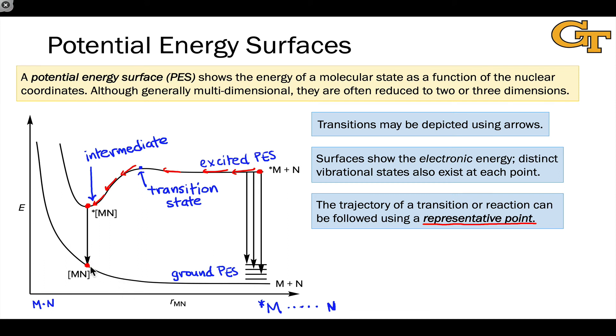And then we can talk about dissociation. Now, as the representative point moves out to the right, M and N separate again. But now, M is in its ground state, as is N.